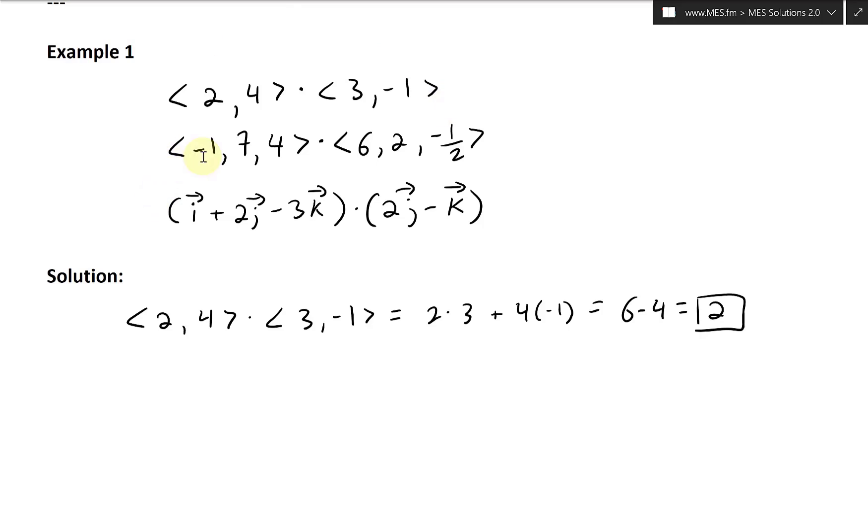All right, now the next one here. That is going to be negative 1, 7, 4, dot product with, these are three-dimensional vectors, 6, 2, negative 1/2, like that.